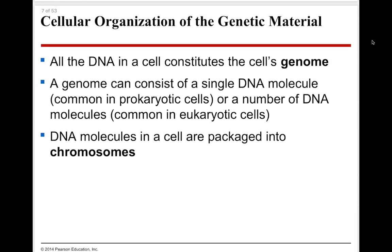All the DNA in a cell constitutes the cell's genome. Inside a eukaryotic cell's nucleus, all the DNA present represents an organism's genome — every piece of DNA that makes up that particular organism. For humans, our genome consists of 46 chromosomes — that's our magic number. You got 23 from your mom and 23 from your dad. A genome can consist of a single DNA molecule in a prokaryotic cell or multiple DNA molecules in a eukaryotic cell, and DNA molecules are packaged into chromosomes.